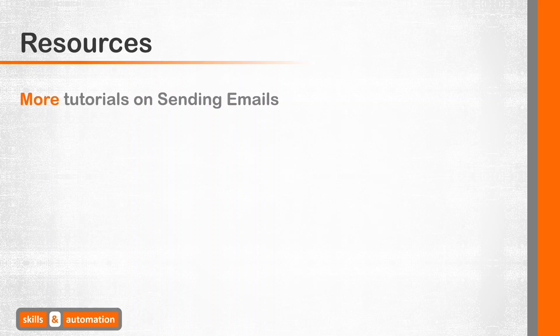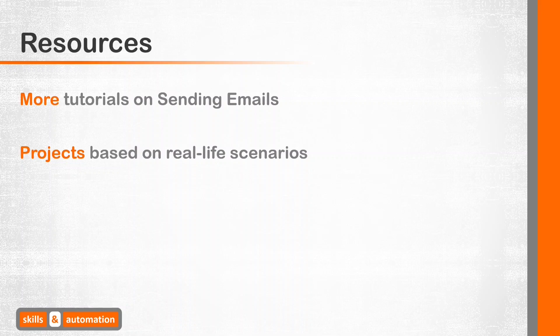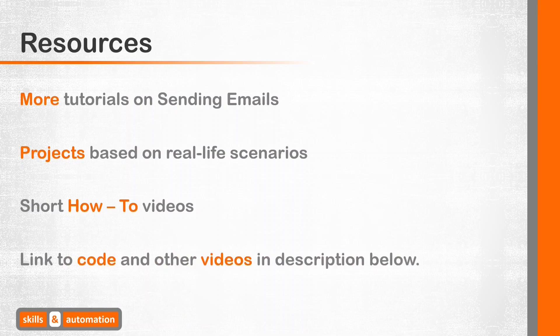Before we begin, I would like to mention that there will be more tutorials coming out on sending emails where we deep dive into some other concepts such as manipulating HTML text inside the email body. In addition, we have YouTube videos for projects based on real-life scenarios such as creating a daily schedule to automatically refresh and send out an Excel report via Outlook. We also have brief how-to videos that cover popular Outlook code snippets that you can access easily. Please do check those out. All the code covered in this tutorial will be available on our website skillsinautomation.com — I'll post the links in the description below.